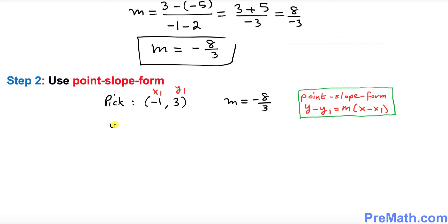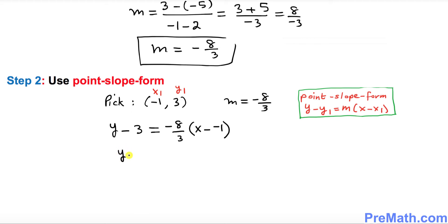Fill in the blanks in the formula: y minus y1 (which is 3) equals m (which is -8/3) times (x minus x1, which is -1). Notice the minus and negative 1 — two negative signs next to each other become positive. So y minus 3 equals negative 8 over 3 times (x plus 1).